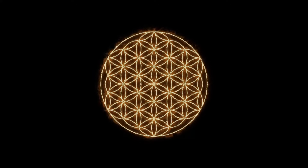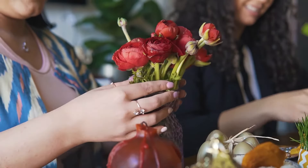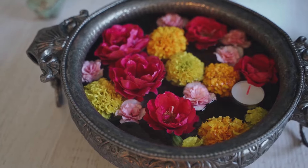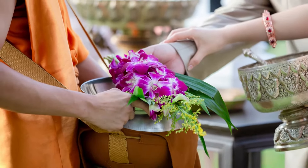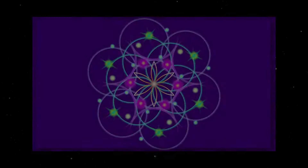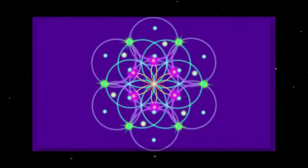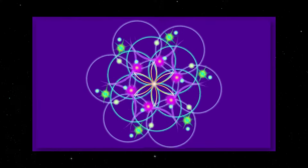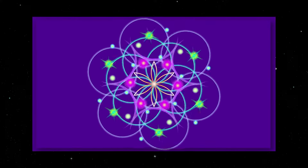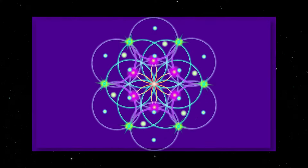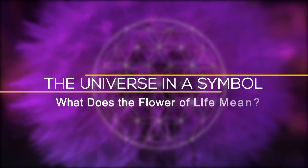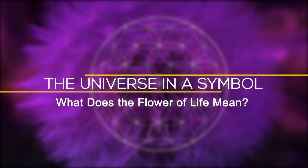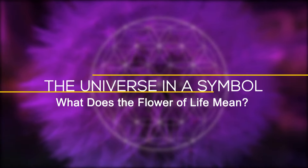The Flower of Life is an ancient symbol that can be found in almost every major culture and religion around the world. The design appears complex at first glance but is really quite simple, made up of a number of interlocking circles. In this video, let's take a look at the surprisingly profound symbolism of the Flower of Life.